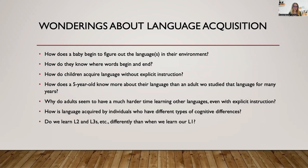And they may still not — by and large, for a vast majority of people — know the same amount as a five-year-old native speaker of the language. Why do adults have such a much harder time learning than young children? How is it that language can be acquired even when individuals have different kinds of cognitive differences? They may not be able to learn some other things, but they are able to learn language.